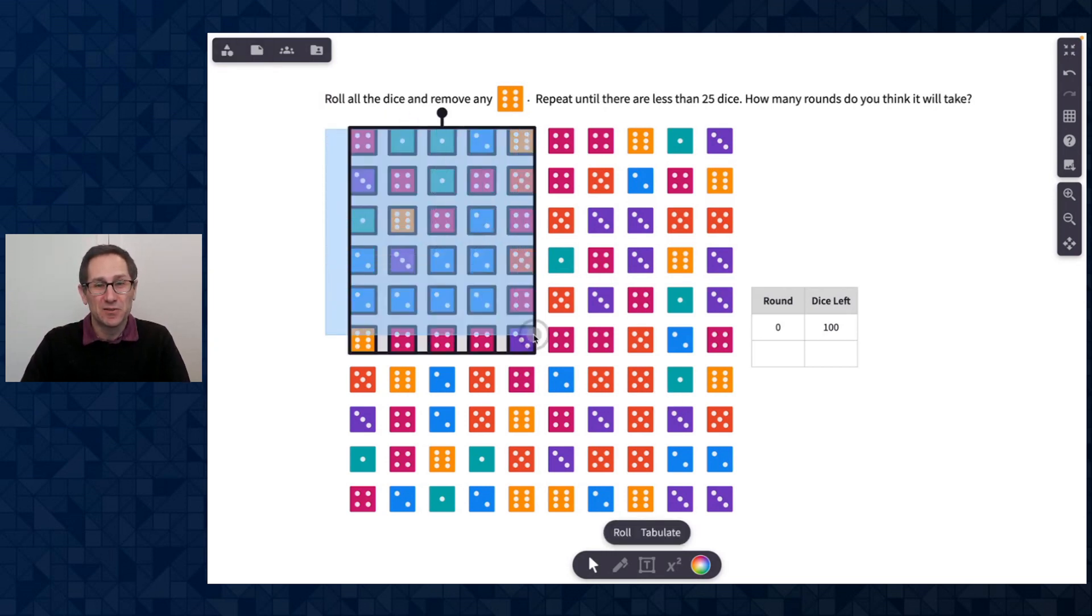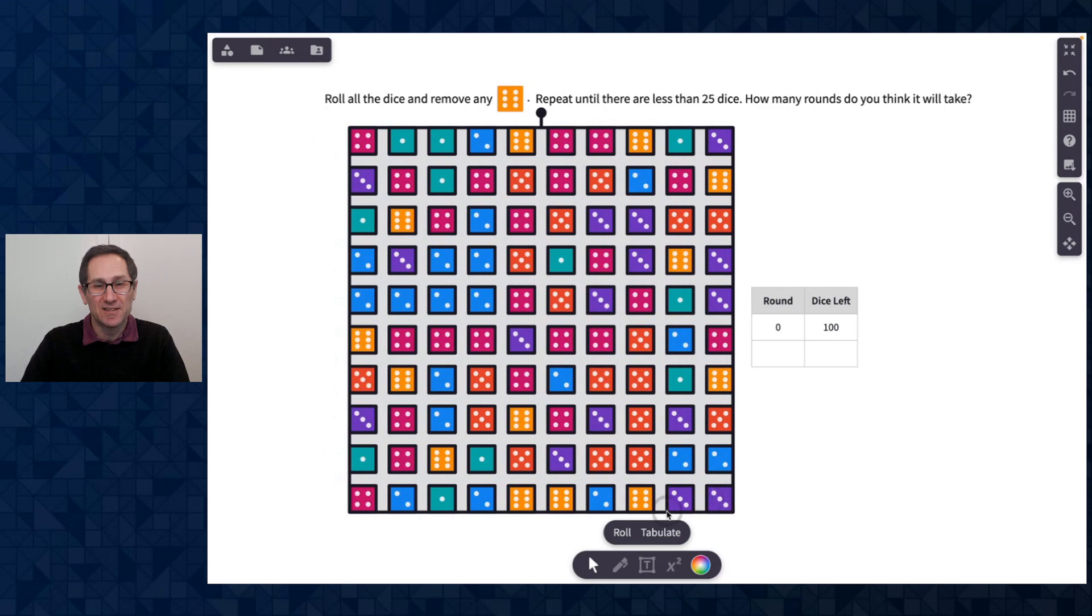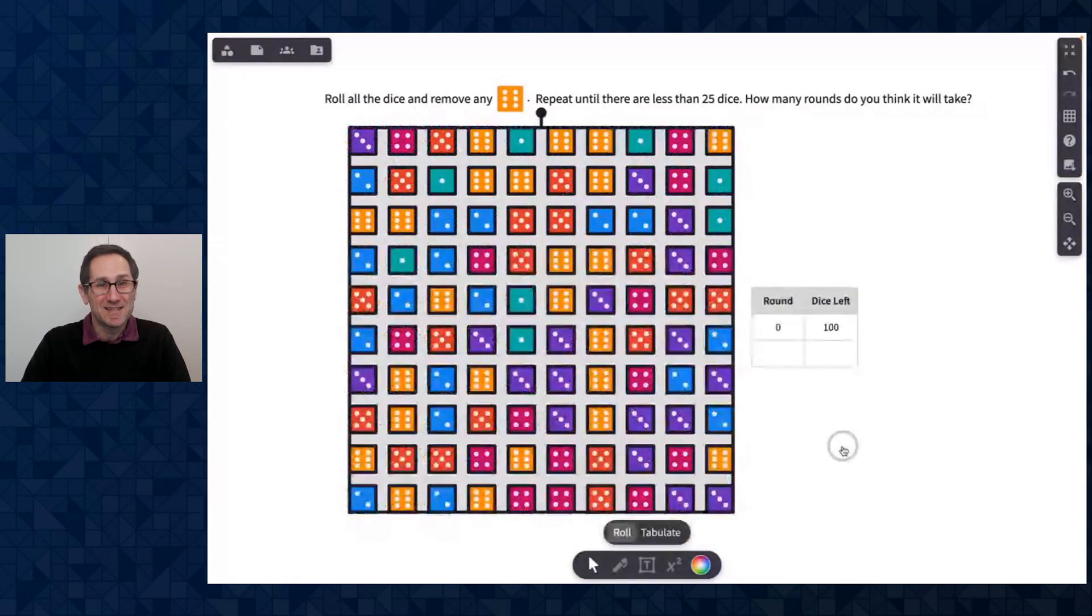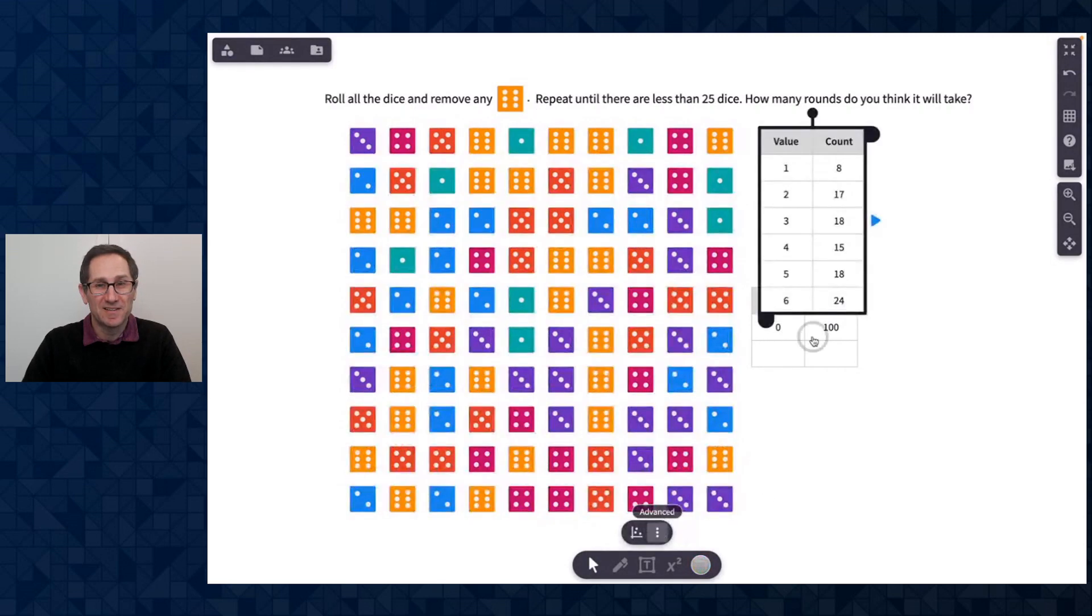So here we go. I'm going to do a click and drag to select all the dice and roll them. And I get some sixes. I don't want to count them all, so I'm going to go to the action bar at the bottom here and click the tabulate button.